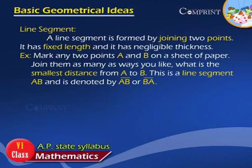Example: mark any two points A and B on a sheet of paper. Join them as many ways as you like. What is the smallest distance from A to B? This is a line segment AB and is denoted by AB bar or BA bar.